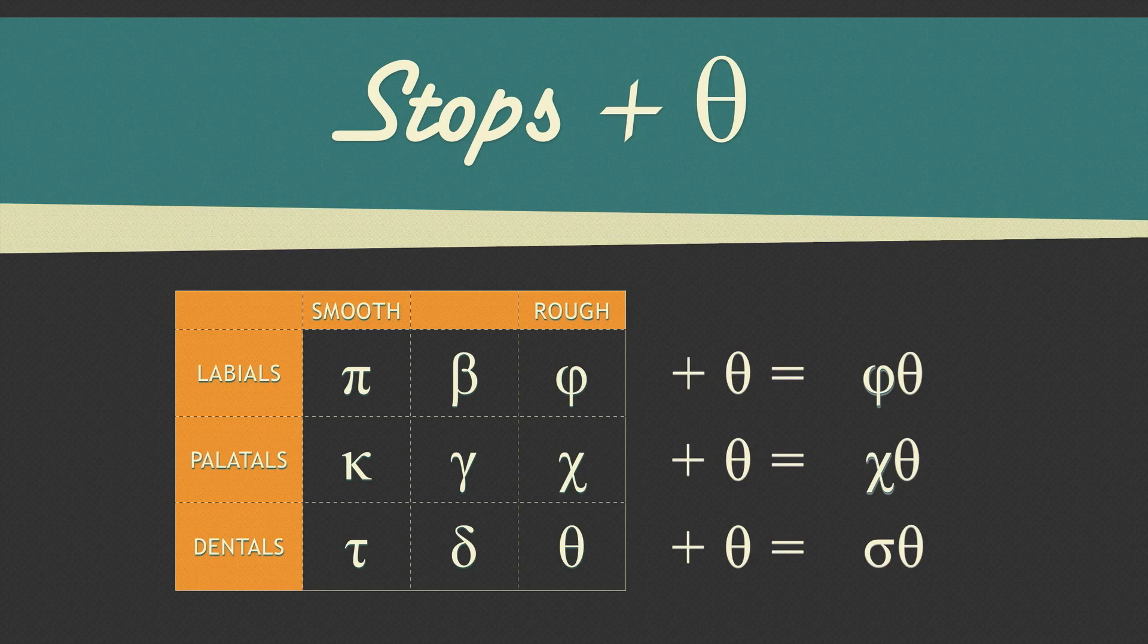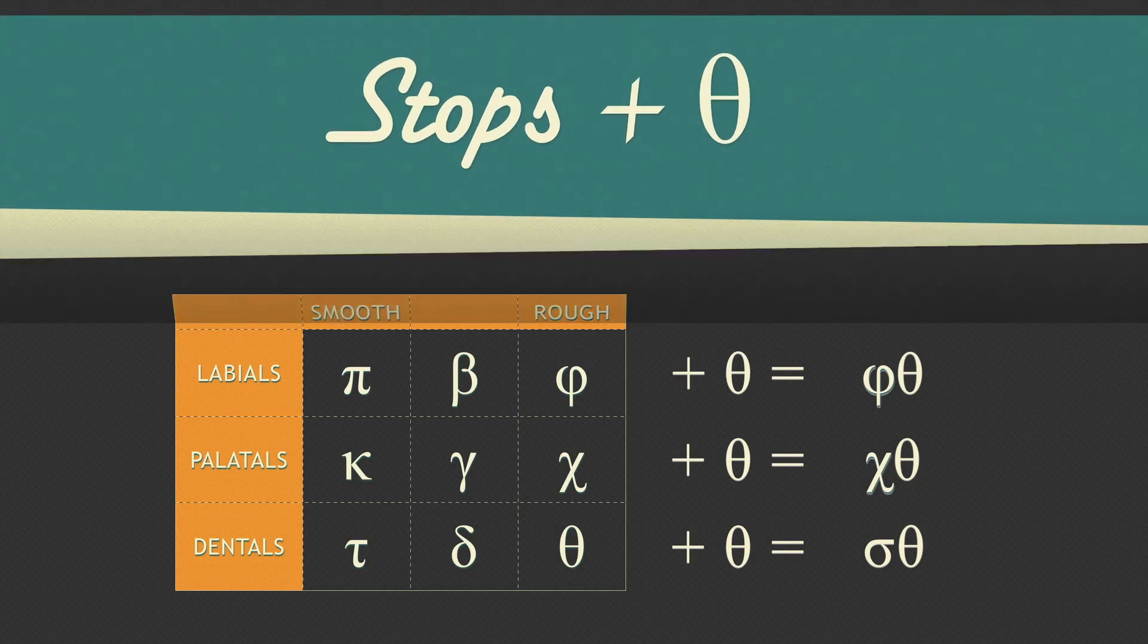Learning about vowel contractions and consonant interactions has highlighted how Greek is different from English. Get to know these rules well because you will see it a lot, especially as you start to learn verbs.